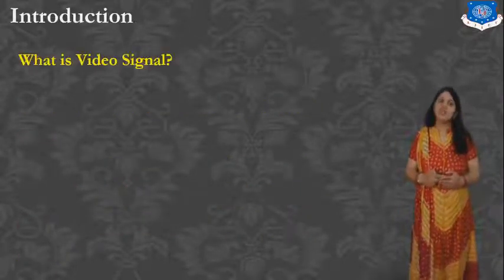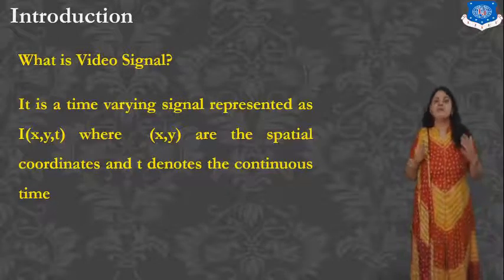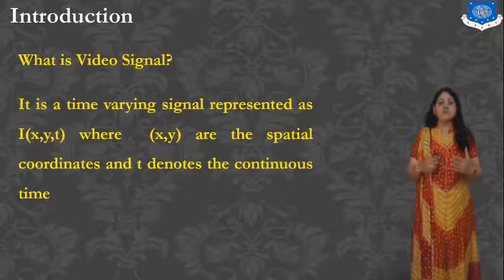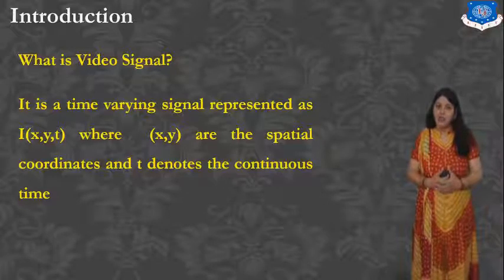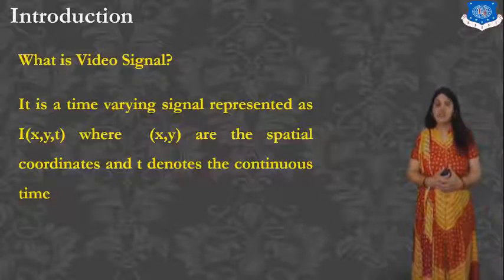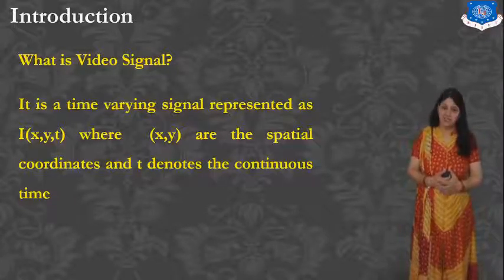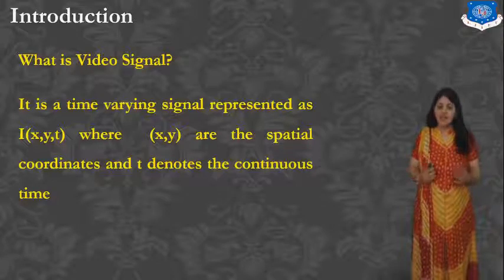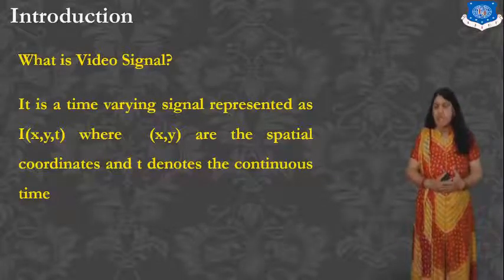The Video Signal is a Time Varying Signal which is represented as I of X, Y, T, where X and Y are the spatial coordinates.